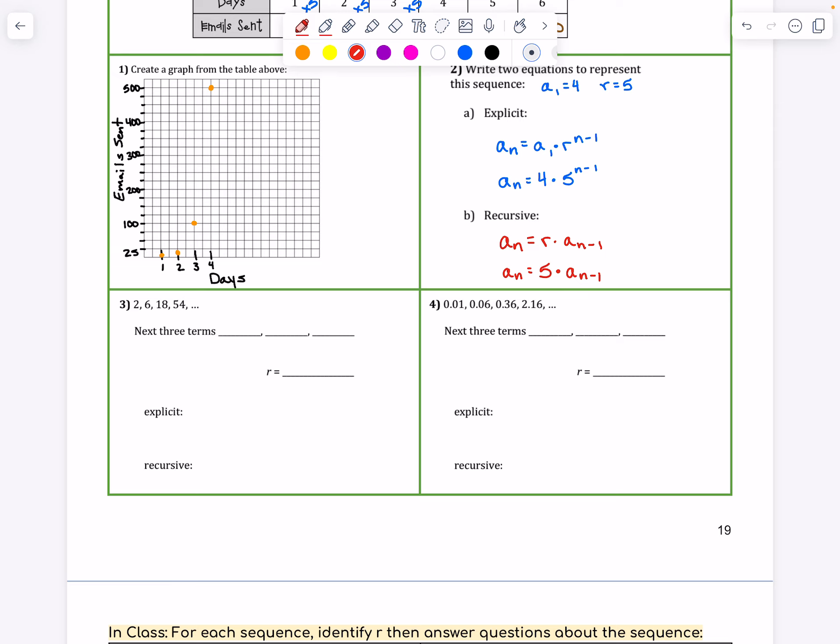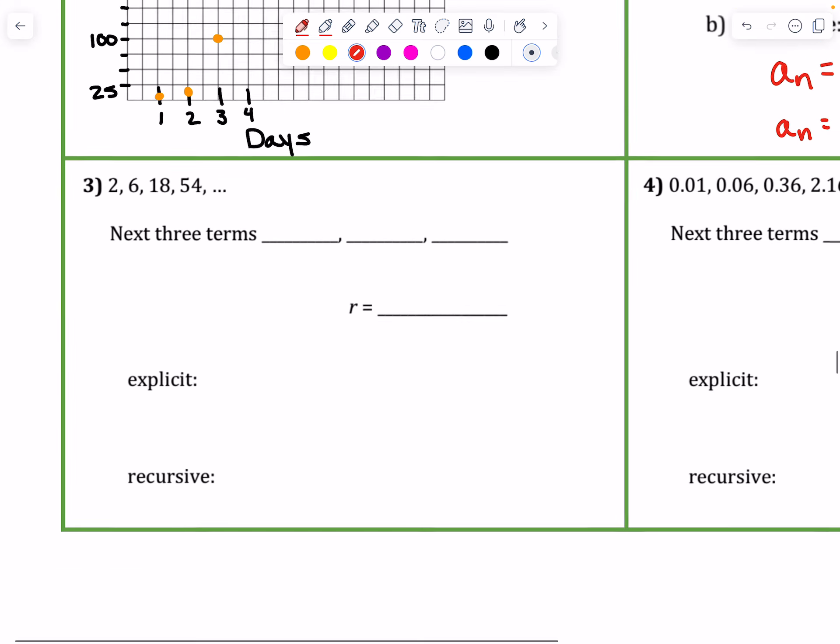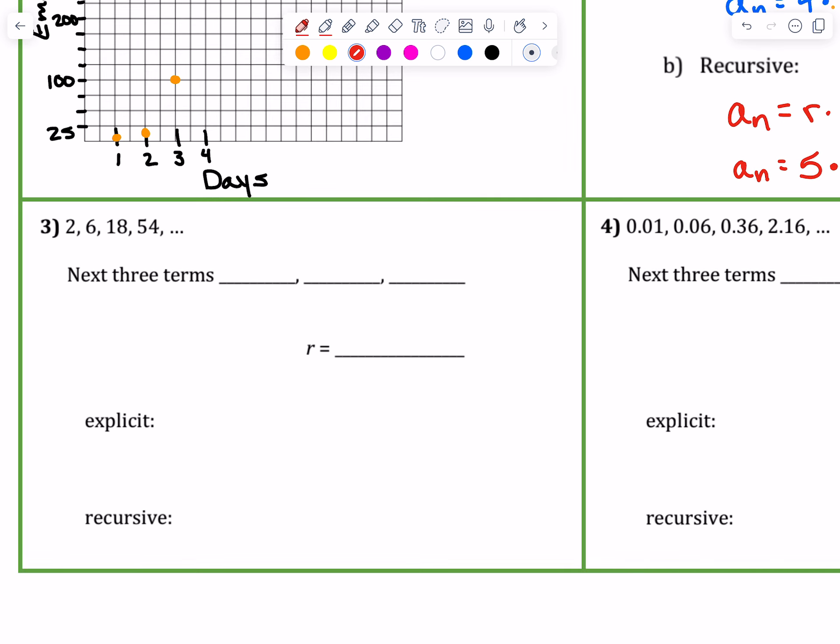Let's just look at two more quick examples. Number 3, our example, or problem number 3 says we have a sequence 2, 6, 18, 54. We want to figure out some things about this sequence. We want to find the next three terms, the common ratio, and write out the explicit and the recursive form. Okay, so to start out, let's figure out what our common ratio is.